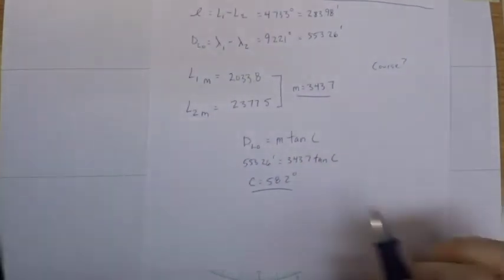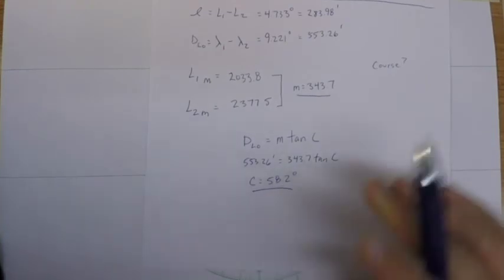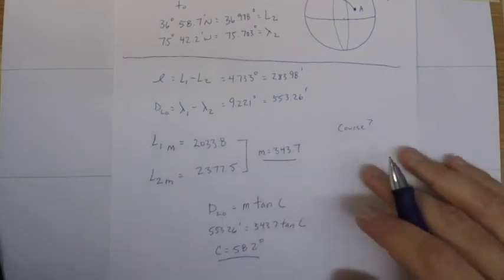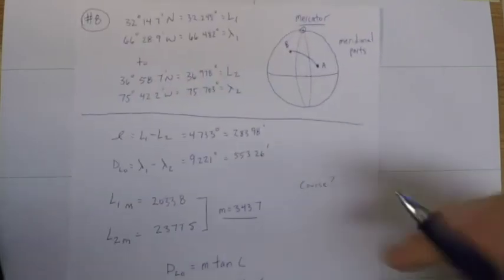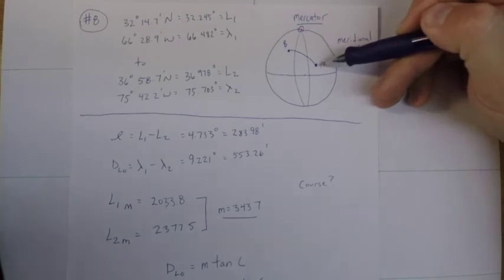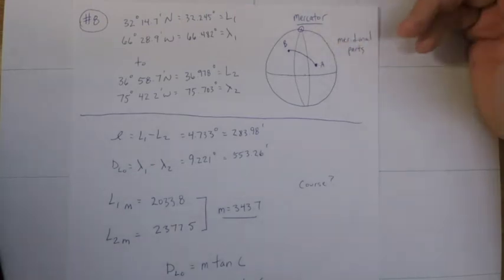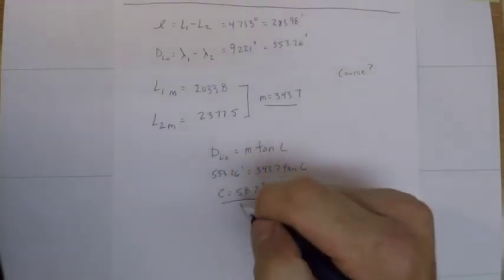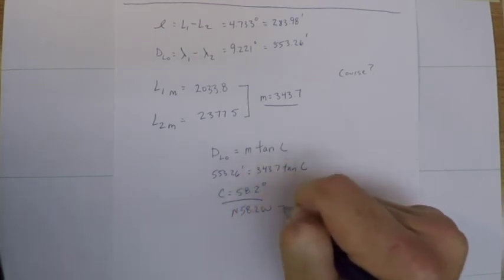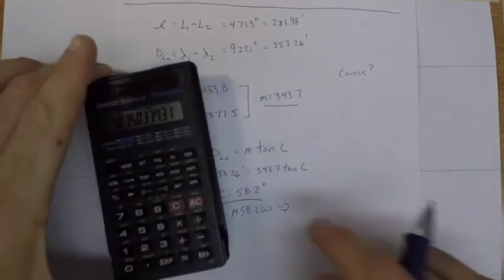So my course angle comes out as 58.2 degrees. And now here's where again I talk about the course angle in a couple other videos, but clearly I'm heading from A to B, I'm not going to be heading on a course of 58.2. So in course angle notation, this is going to be North 58.2° West, which if I subtract that from 360, I get my correct course of 301.8 degrees true.